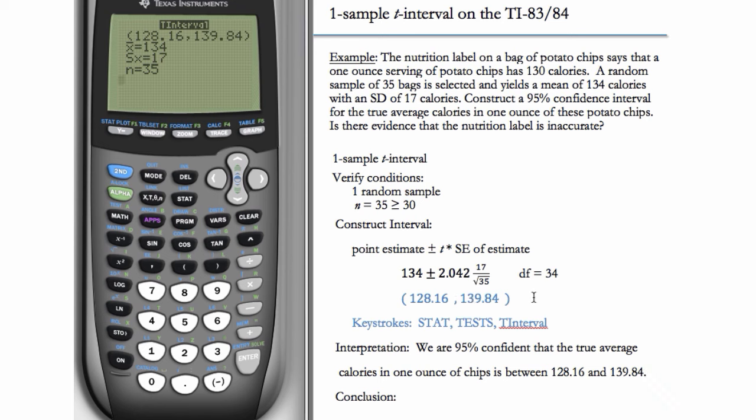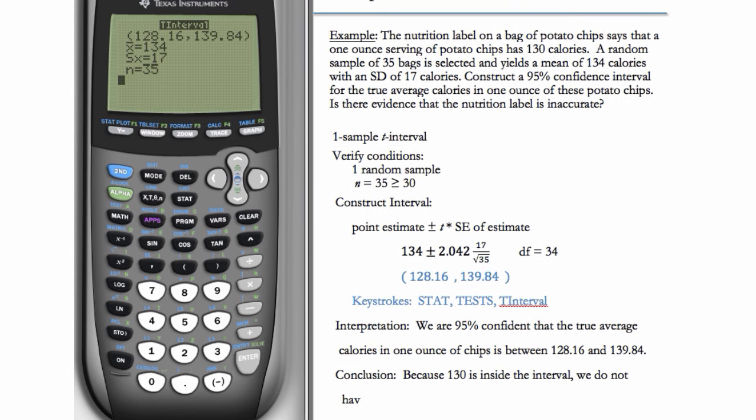Values outside are going to be considered unreasonable. And so since 130 is in the interval, we don't have evidence that the label is inaccurate. So we can say because 130 is inside the interval, we do not have evidence that the label is inaccurate. 130 is a reasonable value.